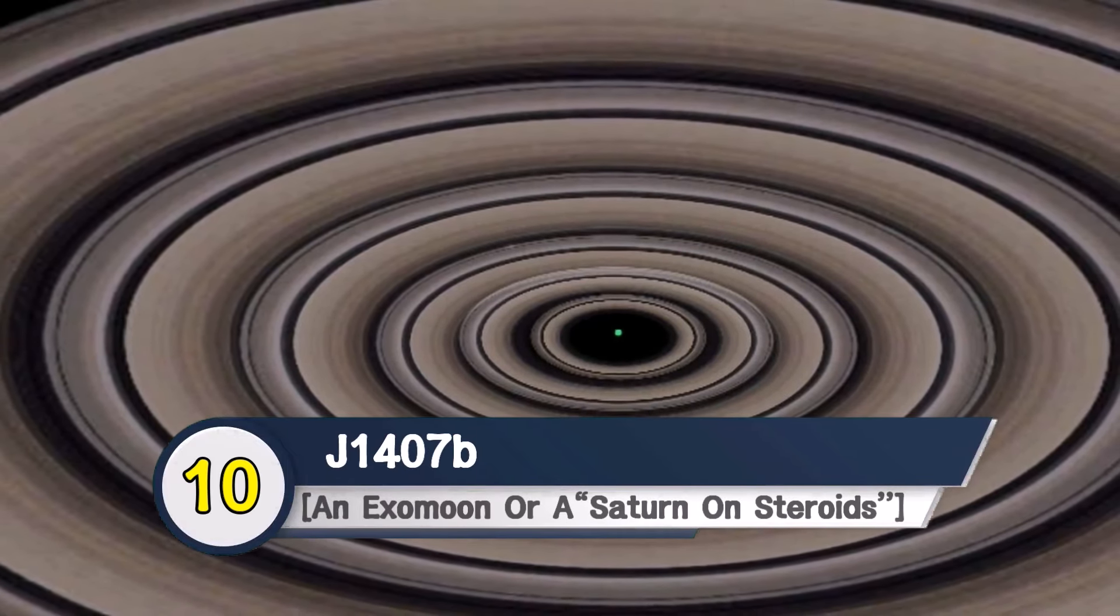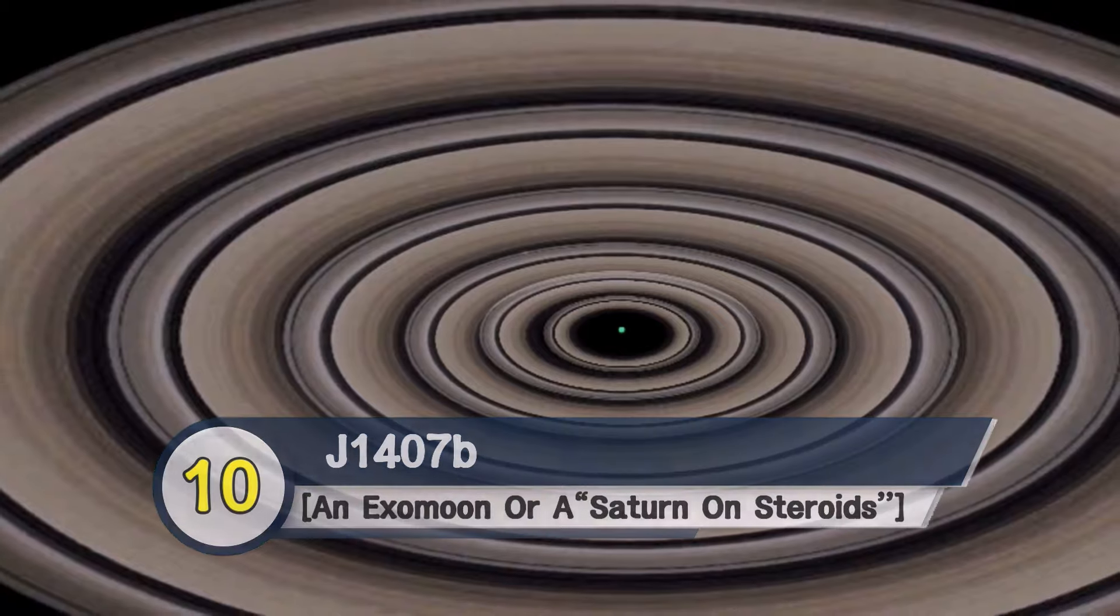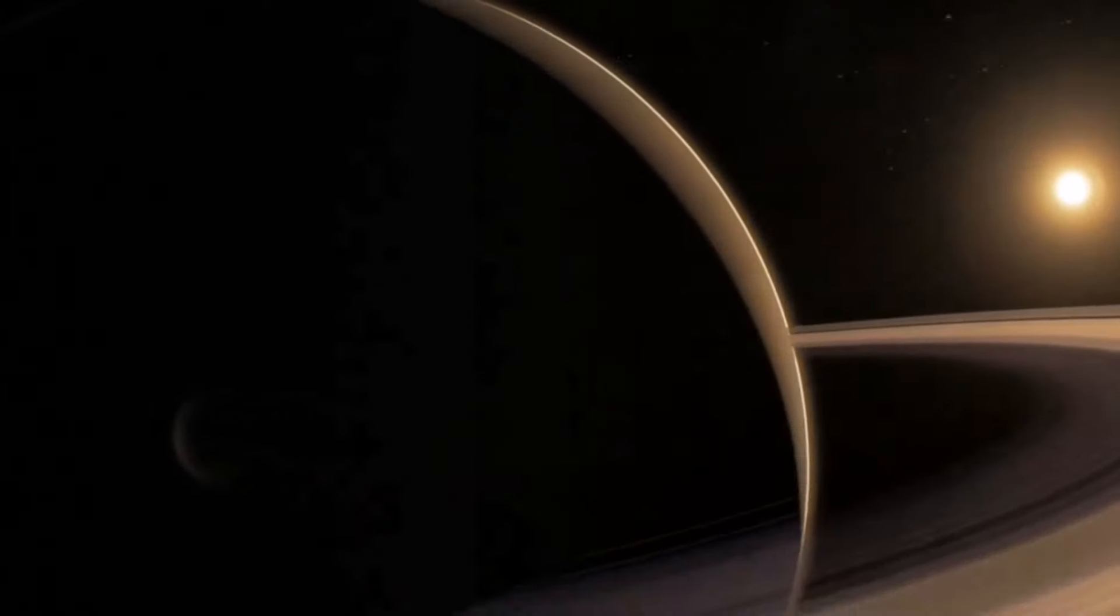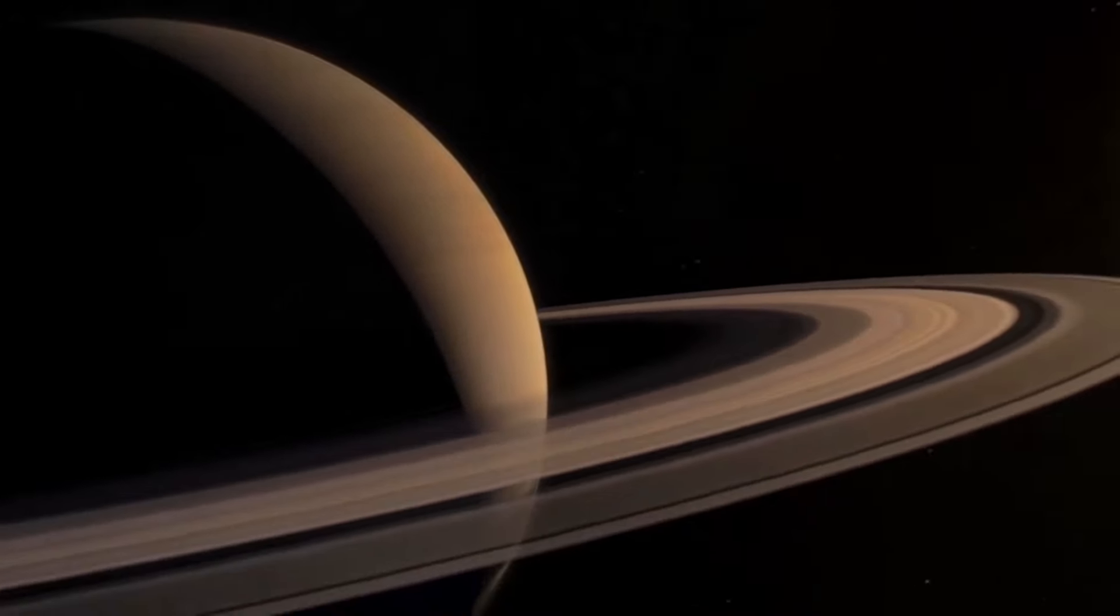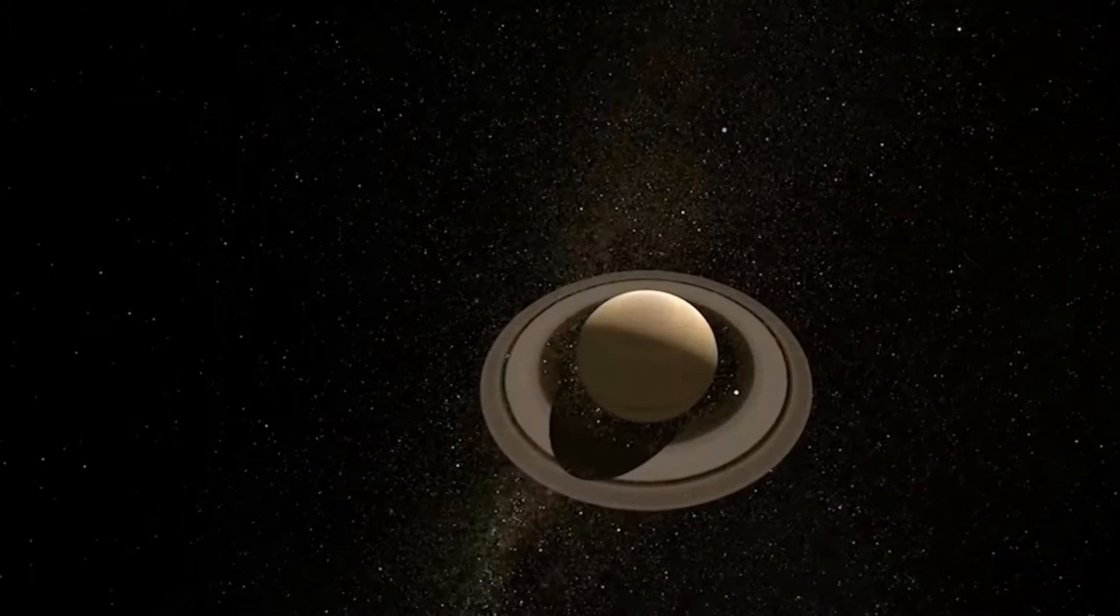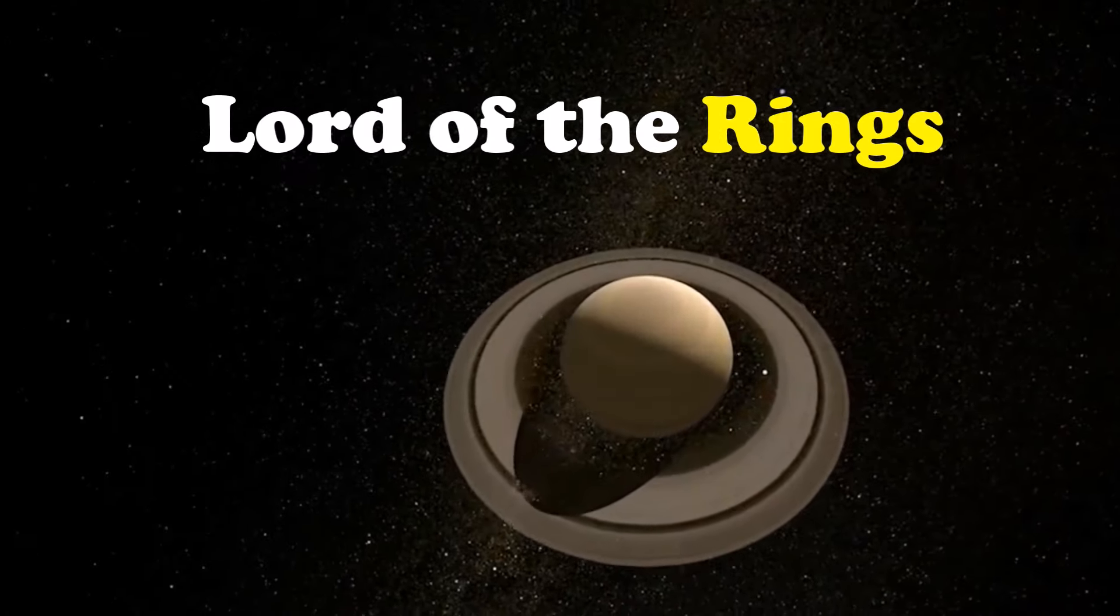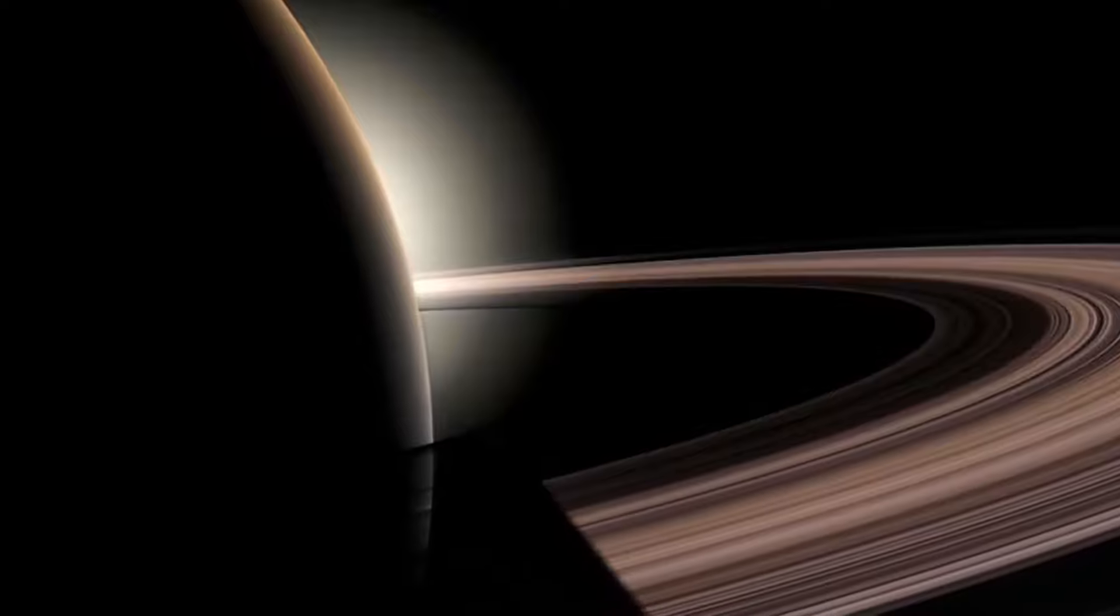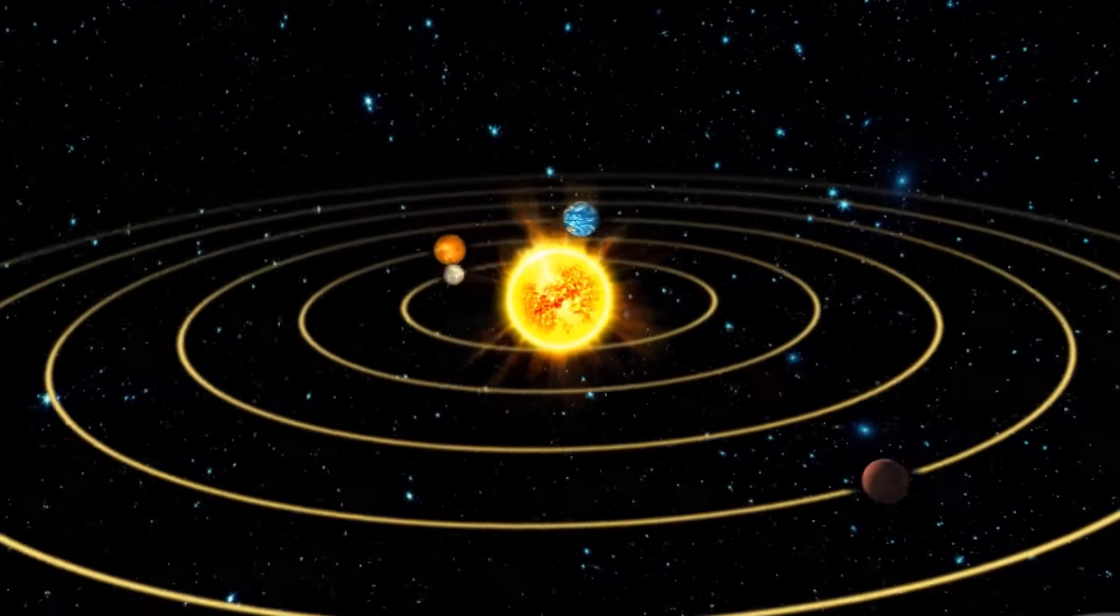J1407b, an exomoon or a Saturn on steroids? Who would have thought that Saturn, our very own Lord of the Rings, has a lord of its own? Saturn is fondly called Lord of the Rings because its seven spectacular rings are the most of any planet that orbits the Sun.